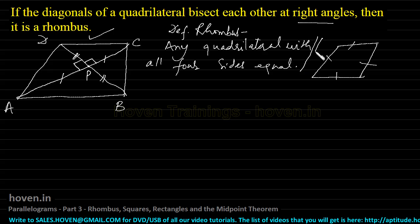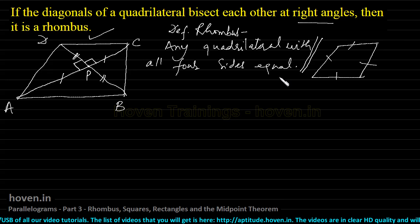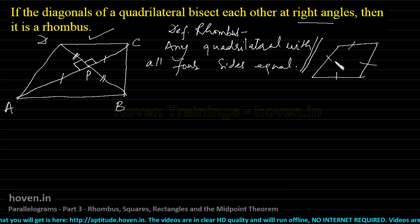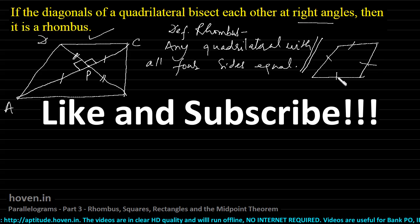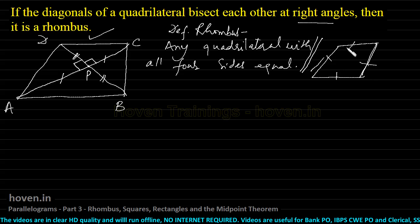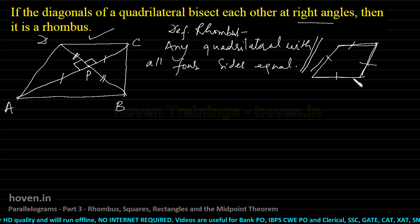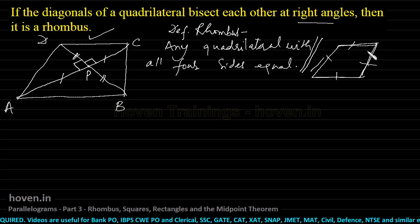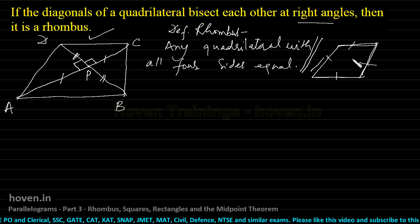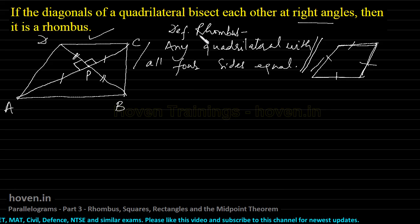This small definition has more meaning in it. When we say a quadrilateral with all four sides equal, there is an implied condition that opposite sides are equal. If all four sides are equal, then each pair of opposite sides is also equal, which is a condition for a parallelogram — as we proved in previous tutorials. So a rhombus is also a parallelogram.